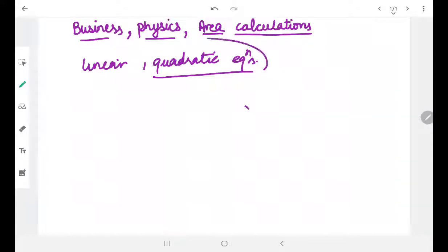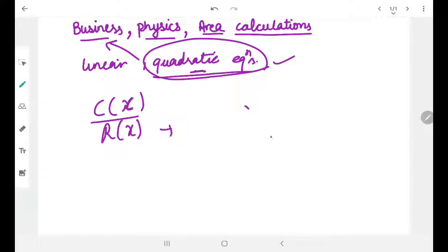Quadratic equations are used too much in business. When we have to calculate the profit, break-even points, they will give you the cost function. You will know the cost function, we will find the revenue function. Revenue function is most of the time a quadratic function. Then we find when we will get the maximum profit. That is a next part of the quadratic equations.